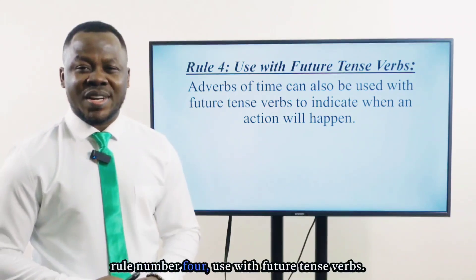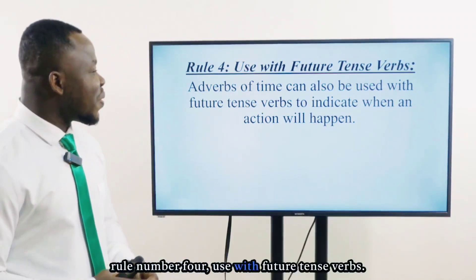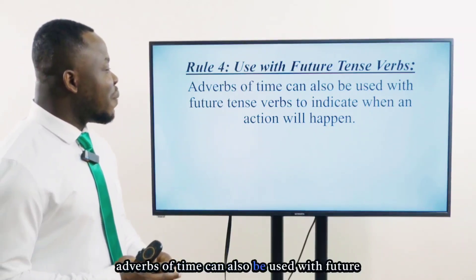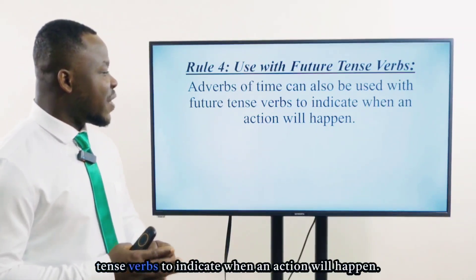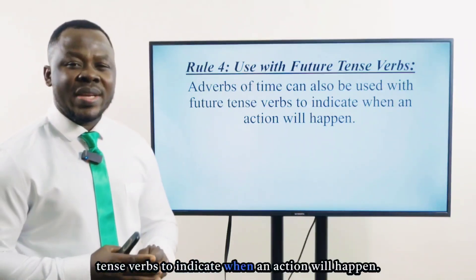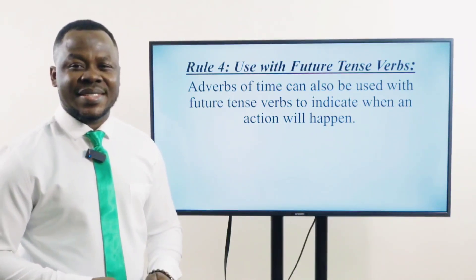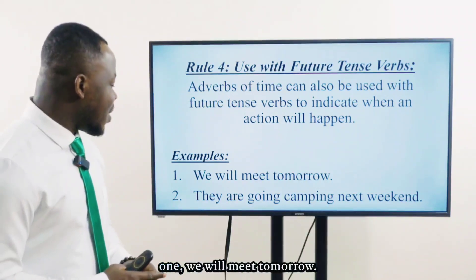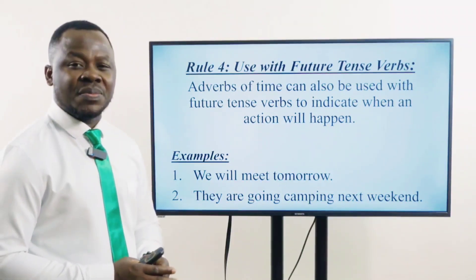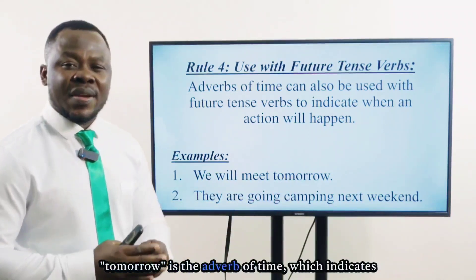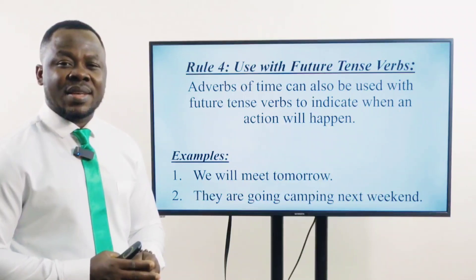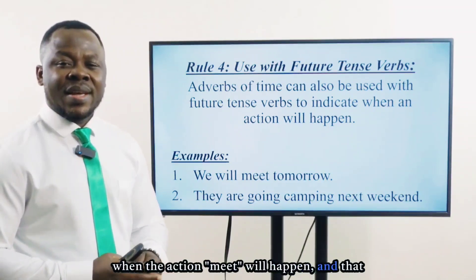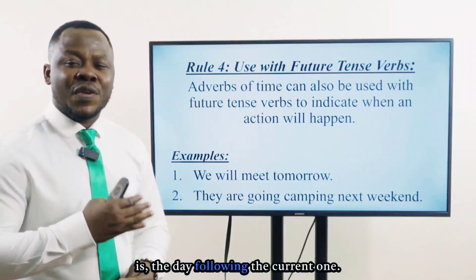Rule number 4: Use with future tense verbs. Adverbs of time can also be used with future tense verbs to indicate when an action will happen. Tomorrow is the adverb of time, which indicates when the action meet will happen — that is the day following the current one.